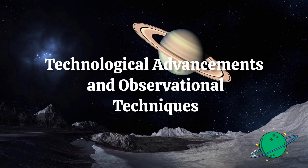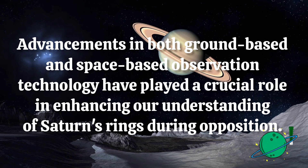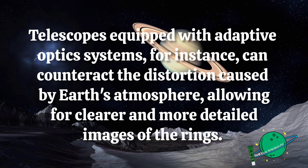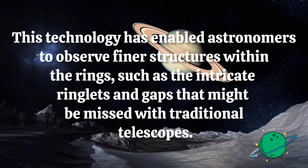Technological advancements in both ground-based and space-based observation technology have played a crucial role in enhancing our understanding of Saturn's rings during opposition. Telescopes equipped with adaptive optics systems, for instance, can counteract the distortion caused by Earth's atmosphere, allowing for clearer and more detailed images of the rings. This technology has enabled astronomers to observe finer structures within the rings, such as the intricate ringlets and gaps that might be missed with traditional telescopes.